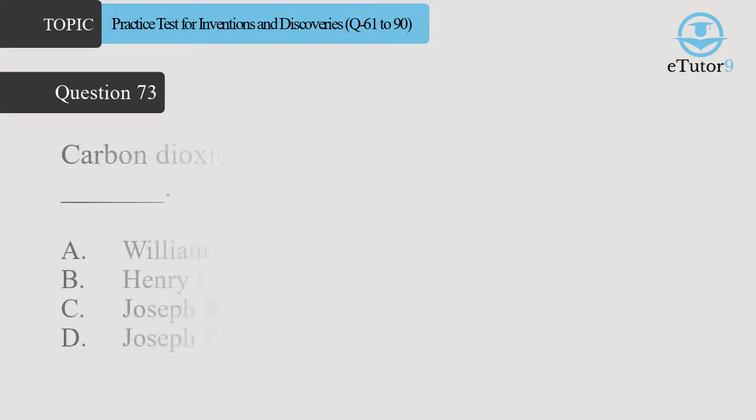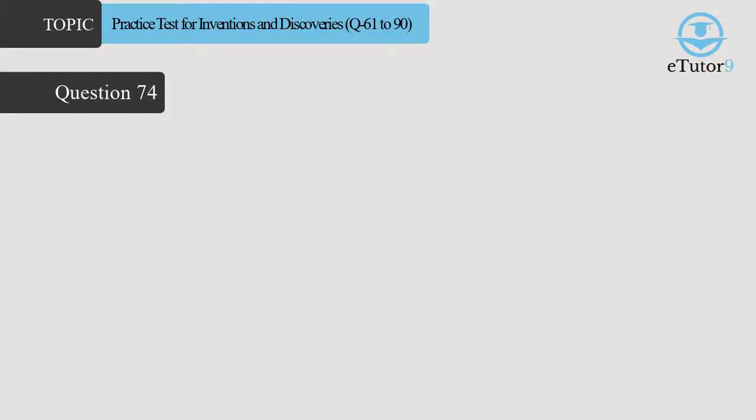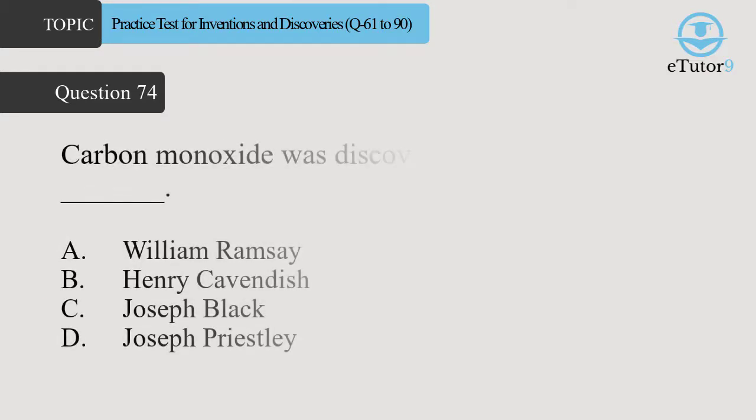Question 73. Carbon dioxide was discovered by Dash? Answer is C. Joseph Black. Question 74. Carbon monoxide was discovered by Dash? Answer is D. Joseph Priestley.